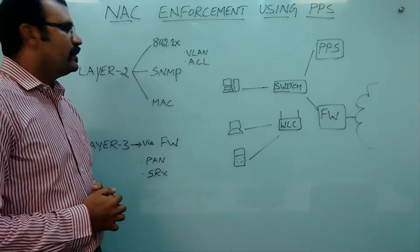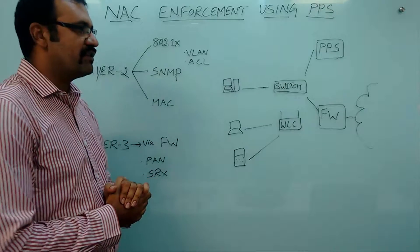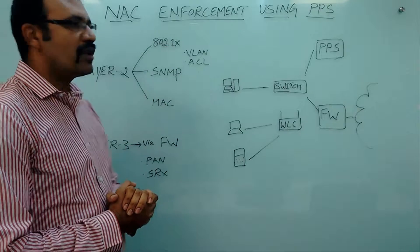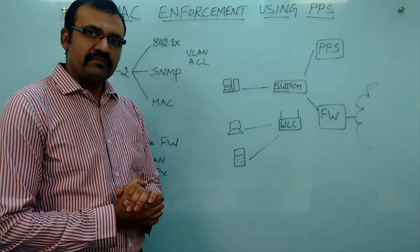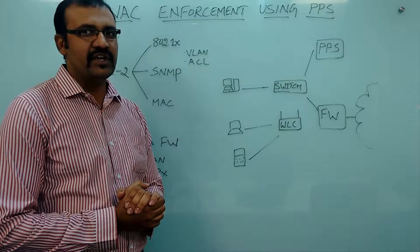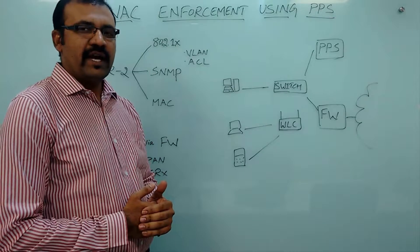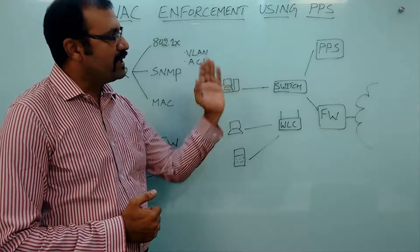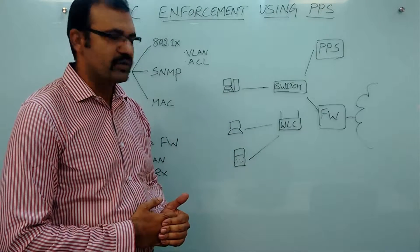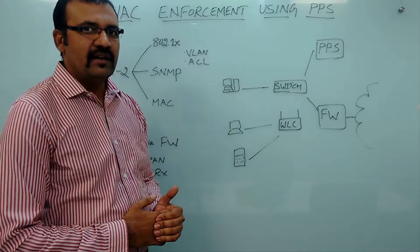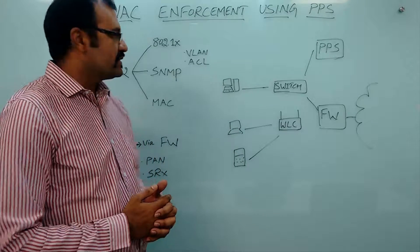For wired layer 2 enforcement, there are different protocol options. The first is 802.1x, which is a universal IEEE standard. It uses port level access and authentication with RADIUS protocol. Pulse Policy Secure applies security policies on the switch port or WLC, making use of VLAN assignments and ACL filtering.